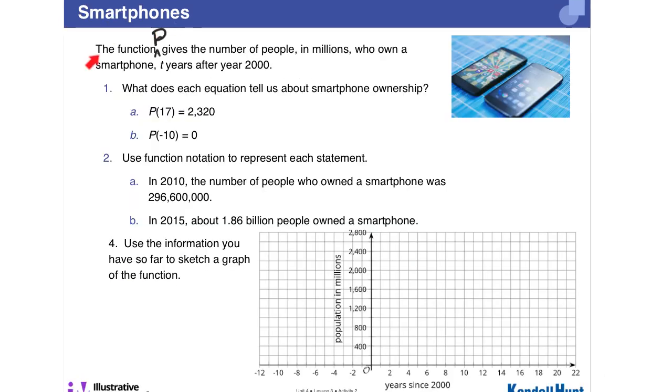In our next activity called smartphones, the function p is going to give the number of people in millions who own a smartphone t years after the year 2000. So in number 1, this function notation is telling us that 17 years after the year 2000, so that's in 2017, this many million people, so you'd have to add million on the end here, owned a smartphone.